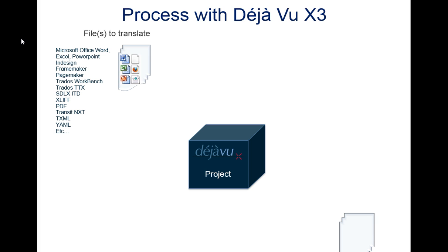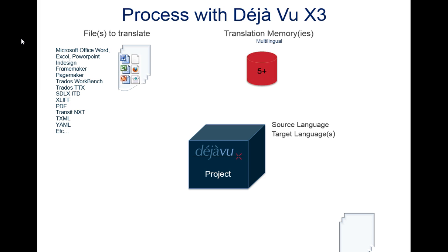When you have a translation request, what you want to do is create a project. A project is an empty box in which you will import the files you want to translate. Then you will specify the source language and the target language — or target languages if you are working on a multilingual project. Then you will attach the translation memories to the project. You can create one when you create a project or beforehand. Then you can do the same thing with the term bases.